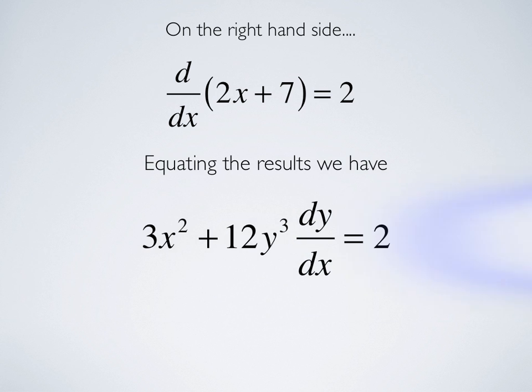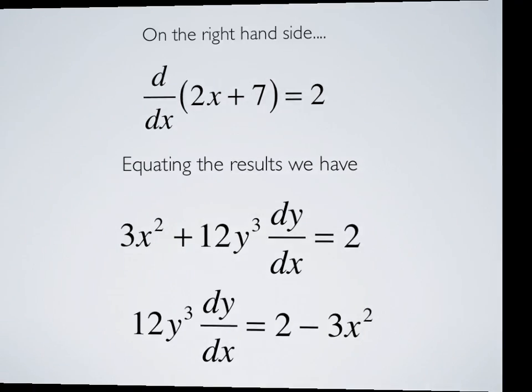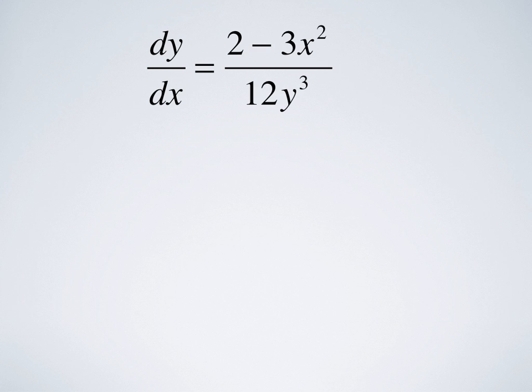Equating both sides, we get 3x squared plus 12y cubed dy dx equals 2. Subtract 3x squared, 12y cubed dy dx equals 2 minus 3x squared. And we did that because we're just going to solve for dy dx. And we get 2 minus 3x squared over 12y cubed.